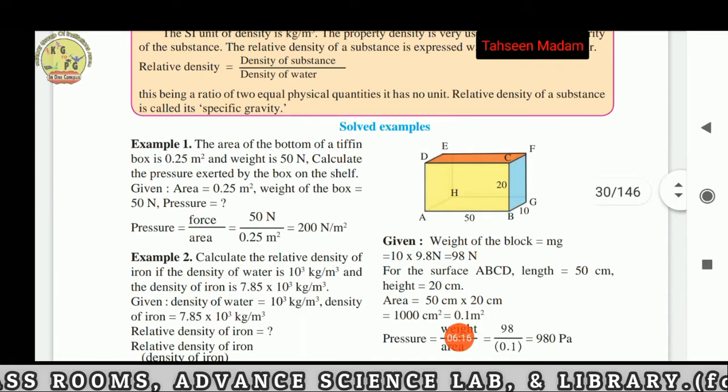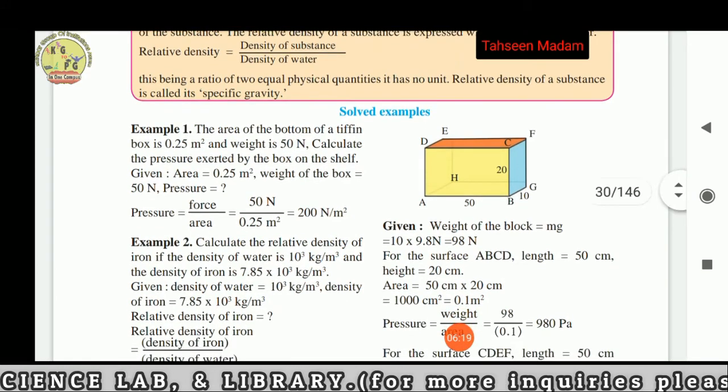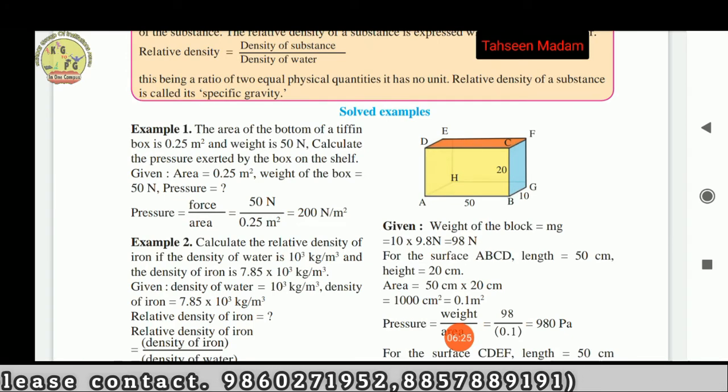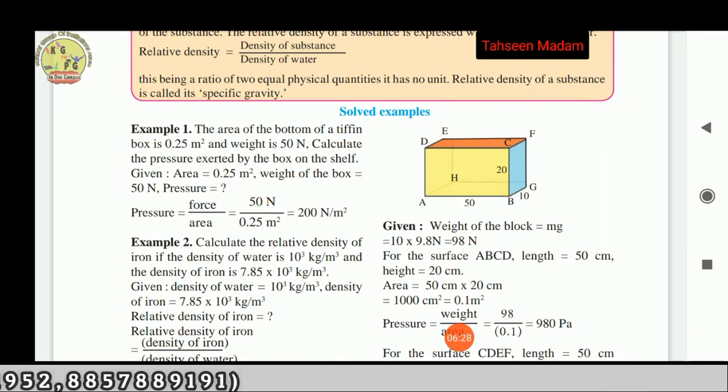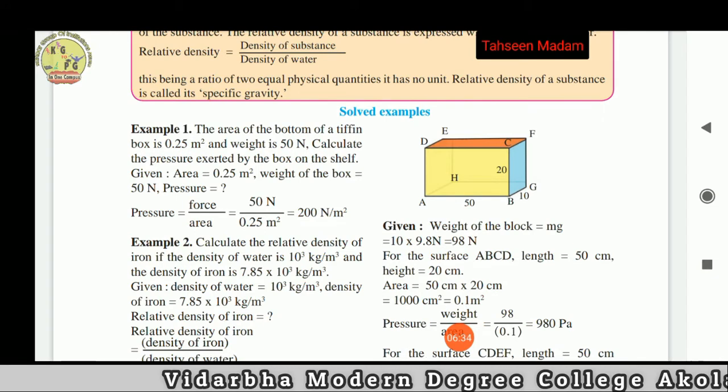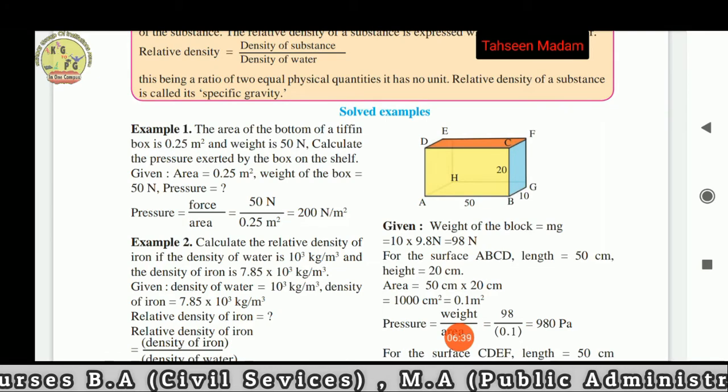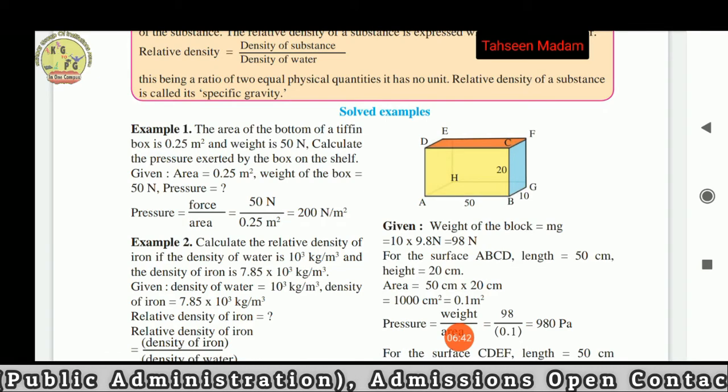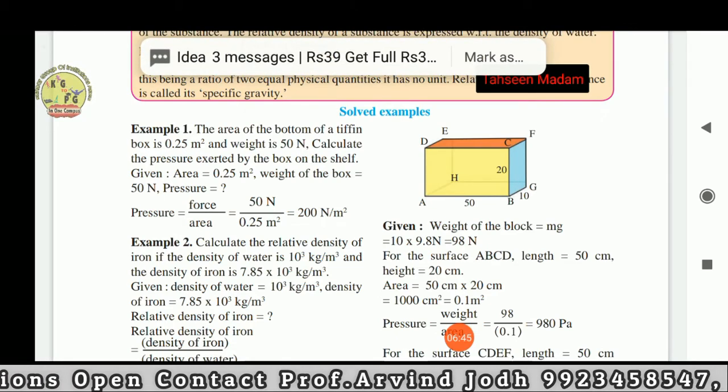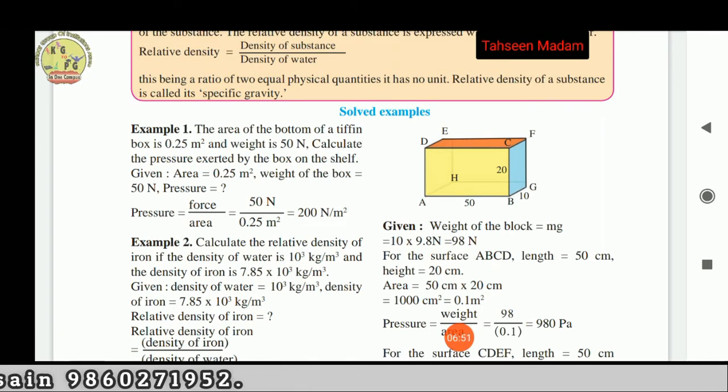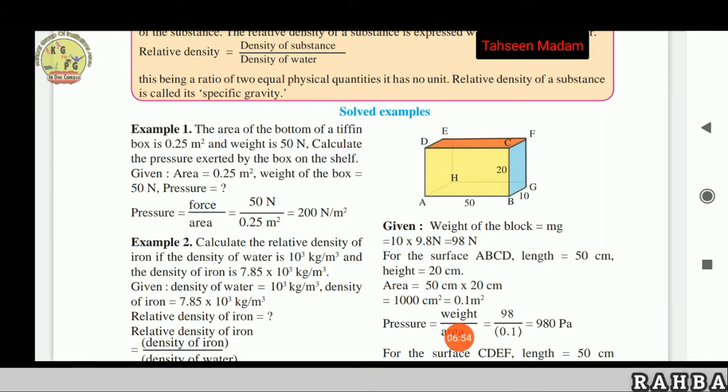Now here is a solved example. First example: The area of the bottom of a tiffin box is 0.25 meter square and weight is 50 newtons. Calculate the pressure exerted by the box on the shelf. Given area is equal to 0.25 meter square and weight of the box is equal to 50 newtons. Then find out the pressure. The formula of pressure is equal to force upon area. 50 newton upon 0.25 meter square is equal to 200 newton per meter square.